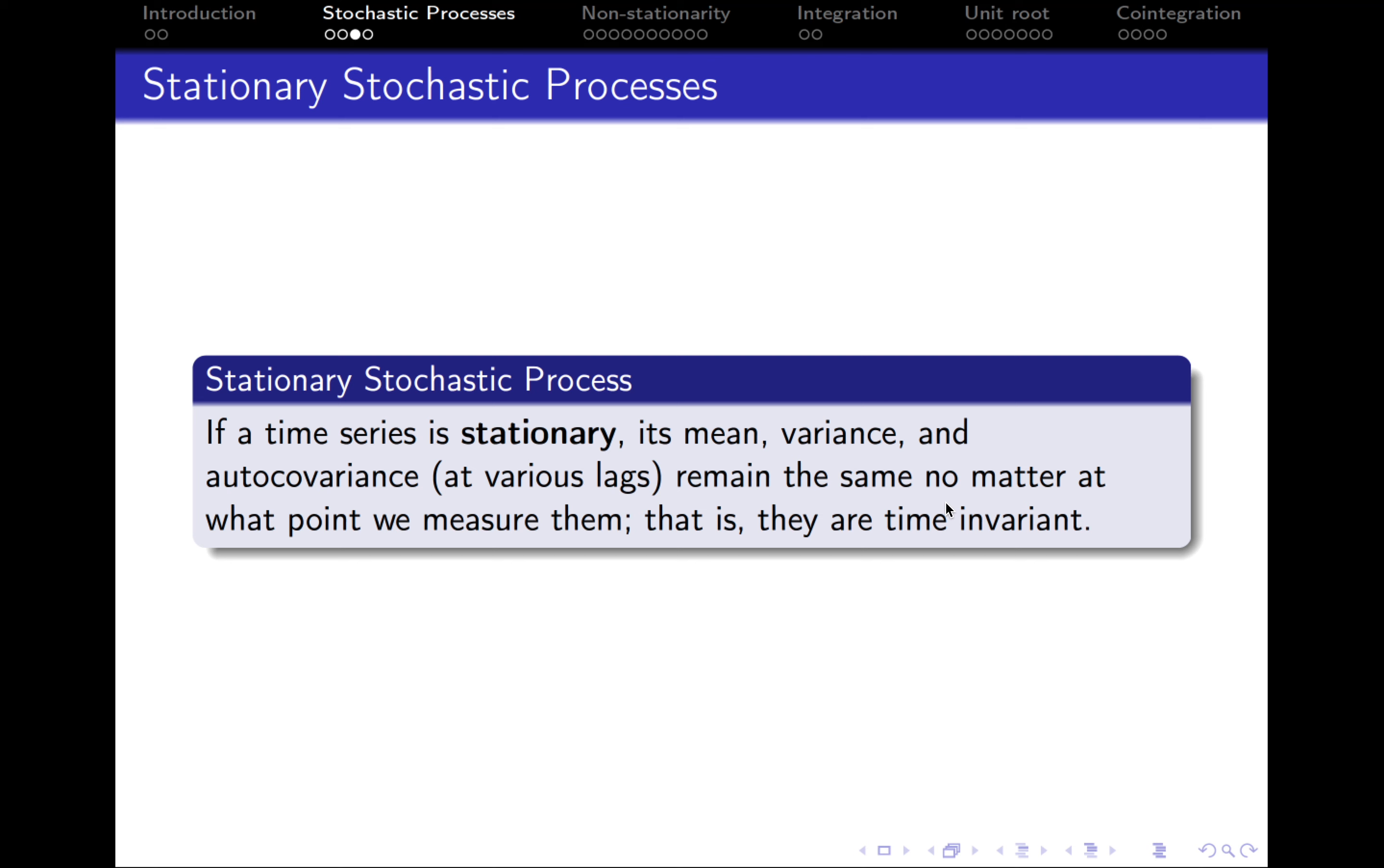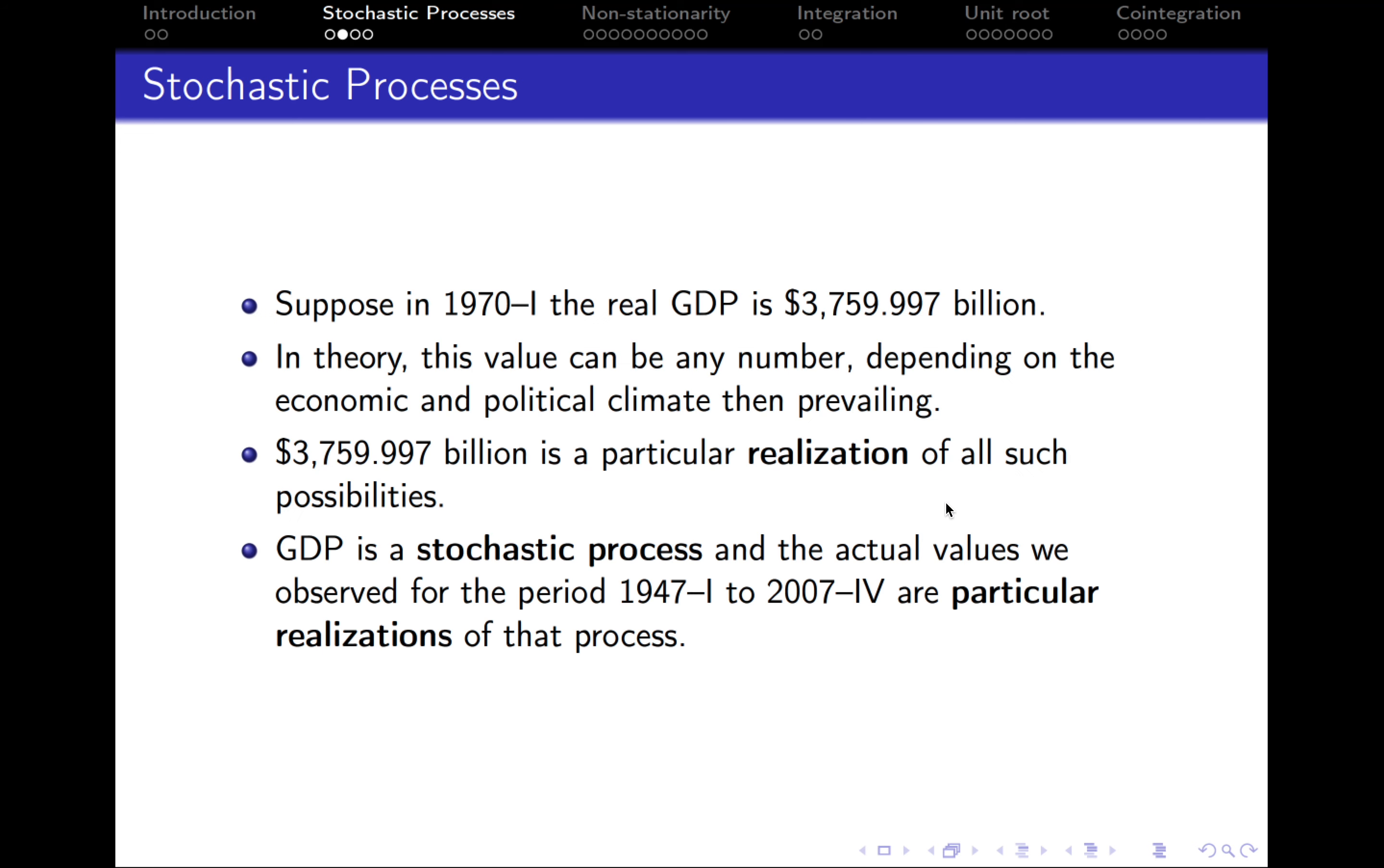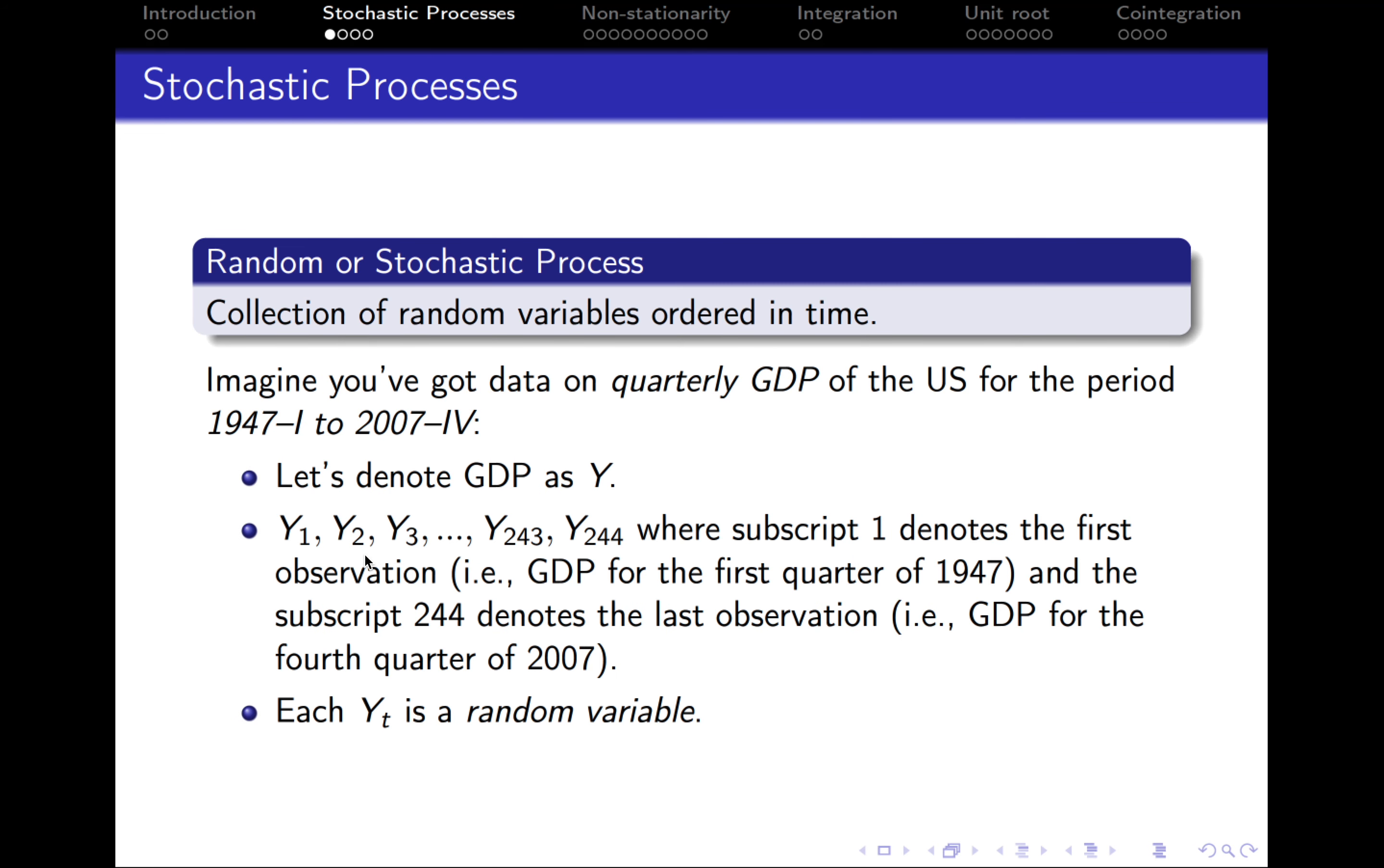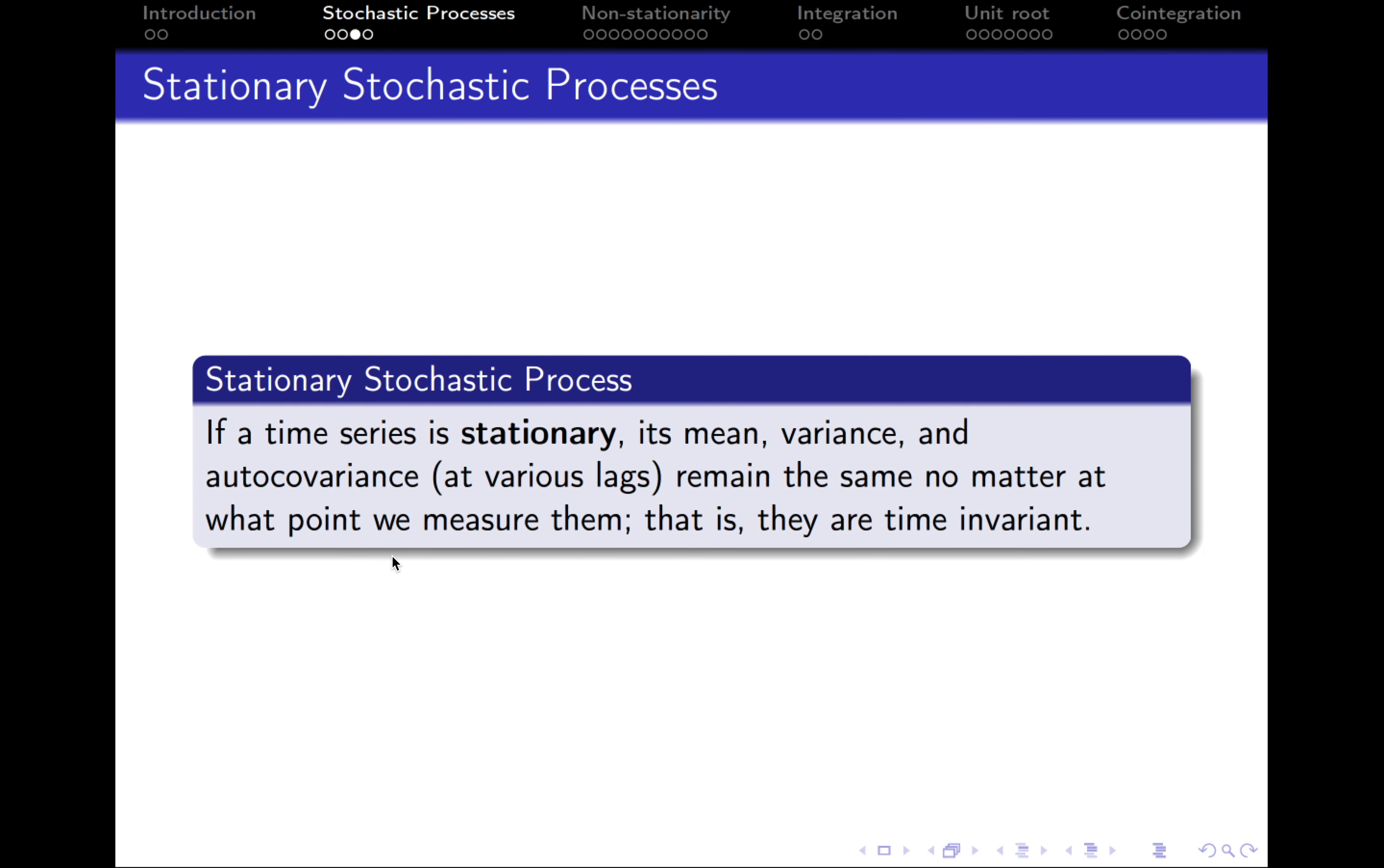If we say the process is stationary, we mean that a time series is stationary, which means that its mean, variance, and autocovariances at various lags remain the same no matter at what point we measure them. That is, they are time invariant. In our case, that would mean the mean value of GDP, its variance, and autocovariances are constant over time—they do not depend on time.